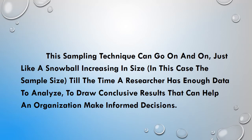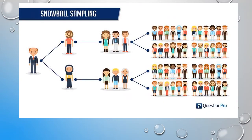Until the researcher has possessed enough data, the chain will be continued, to draw conclusive results that can help an organization make informed decisions. As shown in the diagram, one person introduces two others. Each of those two introduces three more, and each of those three introduces five more.